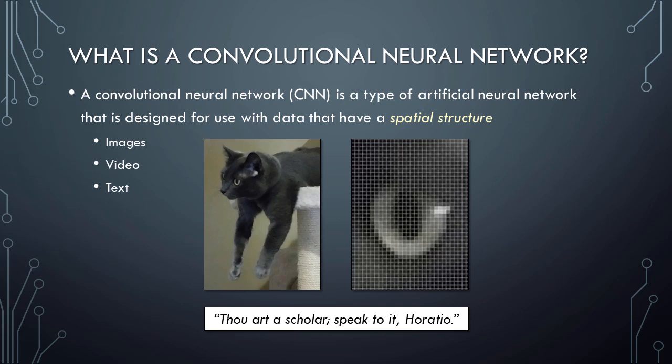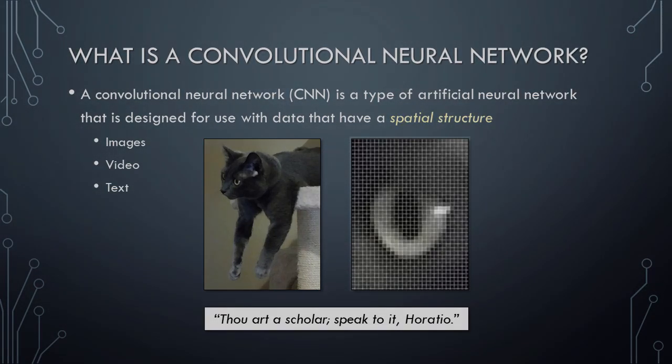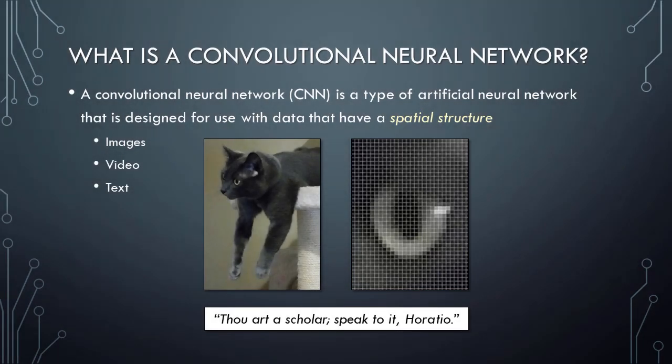So what do we mean by data that have a spatial structure? Let's answer this by considering a photo of a cat named Lyra. Digital images are composed of small squares called pixels. If we zoom in on Lyra's eye, we can see it is composed of dozens of pixels. What's important to understand is that the location of each pixel has meaning — it is only because the pixels are arranged in this particular way that we can identify this as an image of a cat. If we were to randomly reorder all of the pixels, it would become an image of random noise, even though it would contain all of the same pixels as the original.